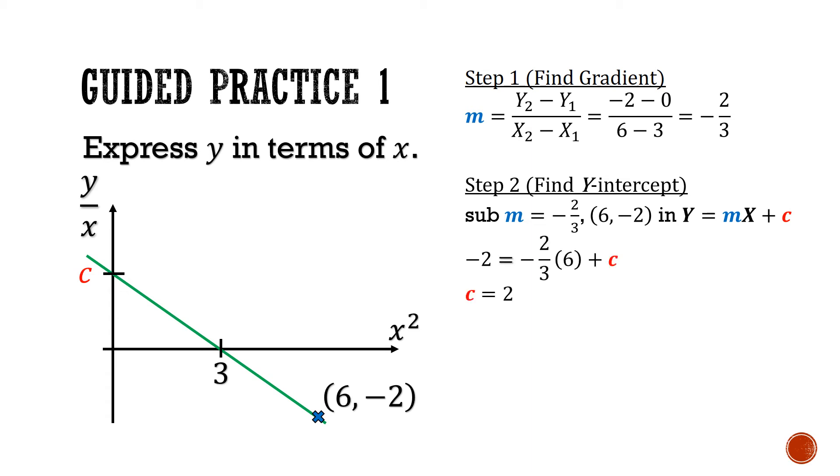So we have big Y equals negative 2, equals the gradient negative 2 thirds, times the big X, which is 6, plus c. Bringing all the things on the right to the left, except for c, we can make c the subject, and c will be equal to 2.